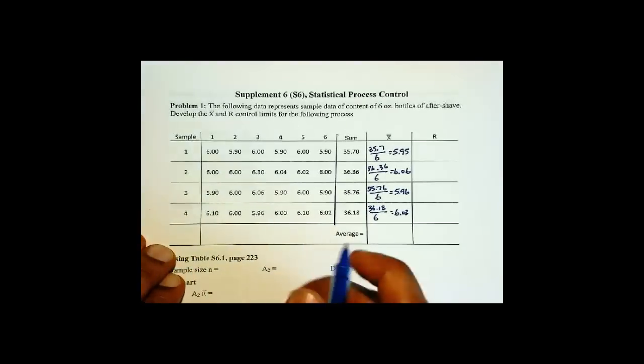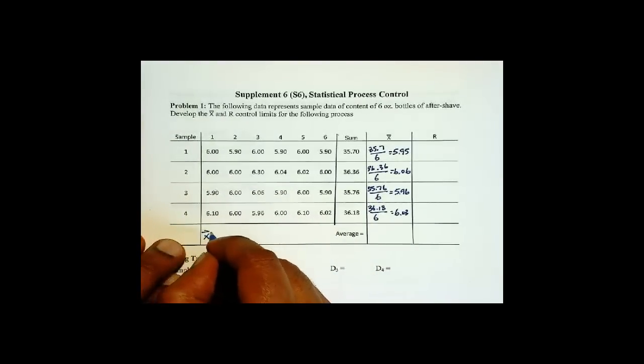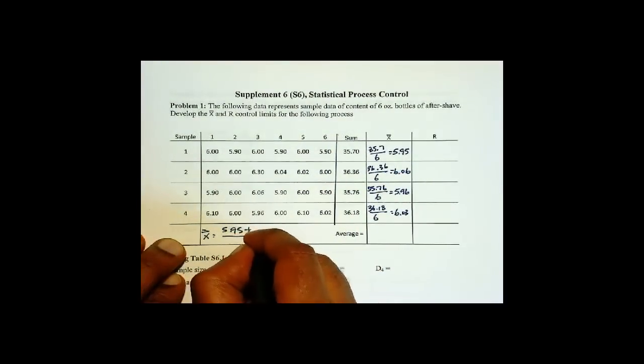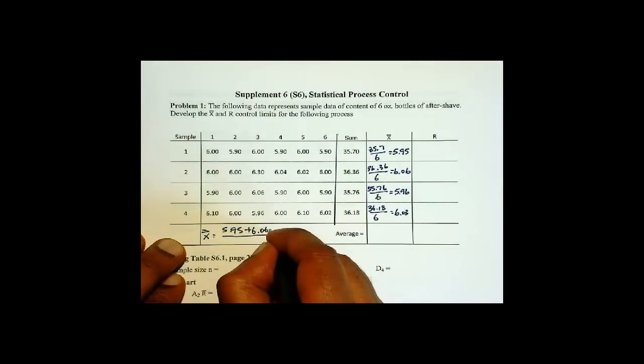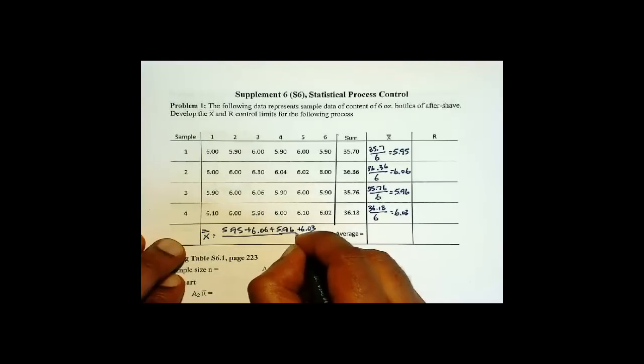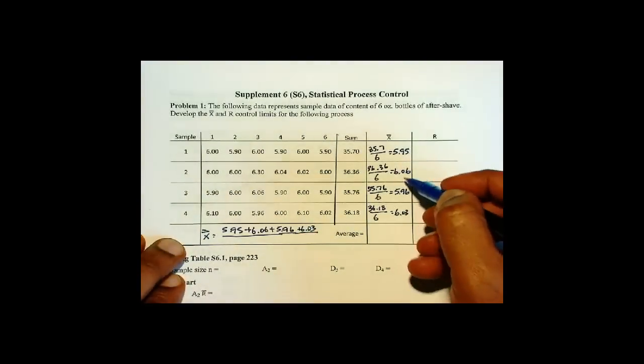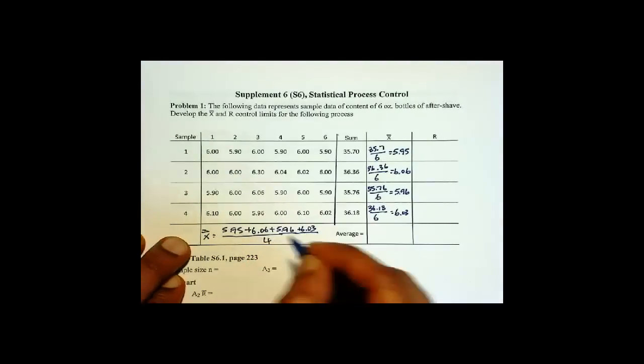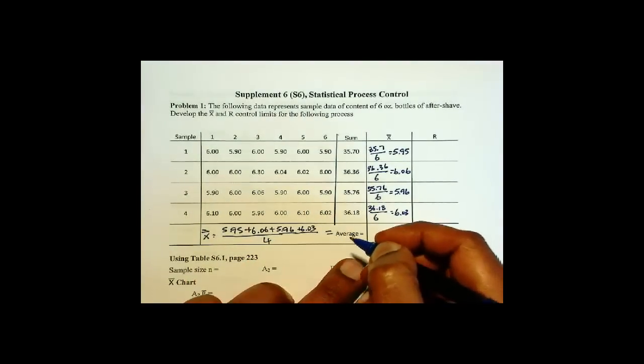Now this x double bar then is you add all of these up: 5.95 plus 6.06 plus 5.96 plus 6.03. There are 4 of these, so divide by 4 and that gives us 6.0.